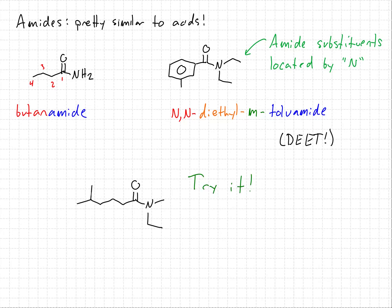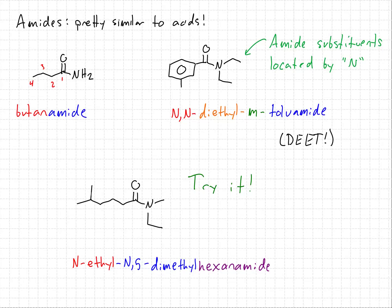Try naming this amide yourself. The name for this compound is N-ethyl-N,5-dimethylhexanamide. We have a 6-carbon amide with a methyl group at carbon 5 and one at the nitrogen, plus an ethyl group on the nitrogen. Remember that substituents are always listed in alphabetical order — E for ethyl comes before M for methyl.